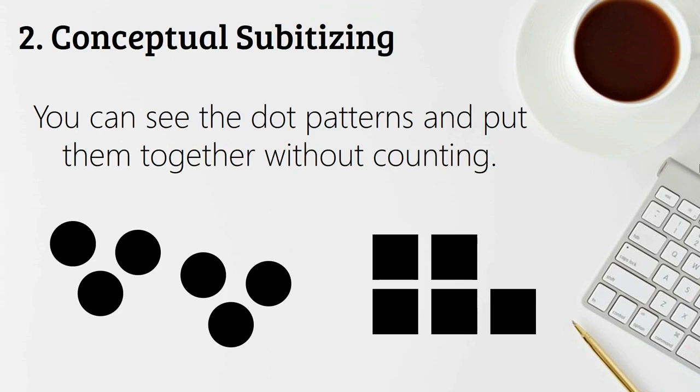And so if you included something like 10 frame, you know, putting one on the top and four on the bottom, is it the same as five all in one row and having those conversations? It's still five. And that brings in some of the other counting principles.